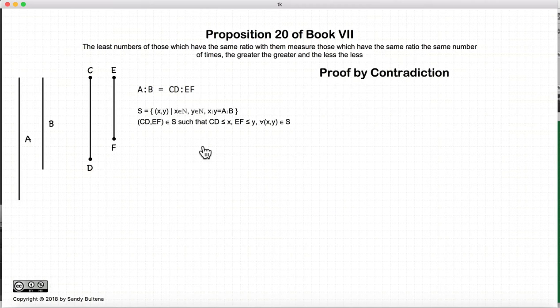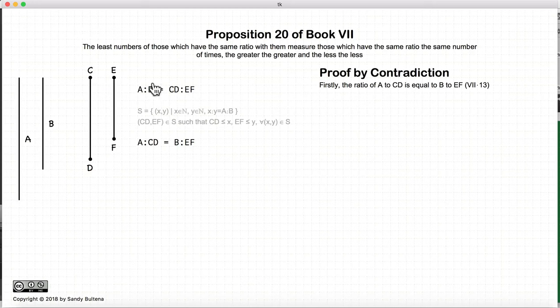So how do we prove it? All right, before we start with any contradiction, according to Proposition 13 of this book, if we have the ratio of A to B equal the ratio of CD to EF, then the ratio of A to CD will be equal to the ratio of B to EF. And again, that's just Proposition 13.